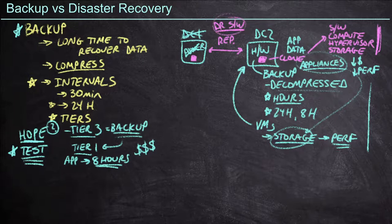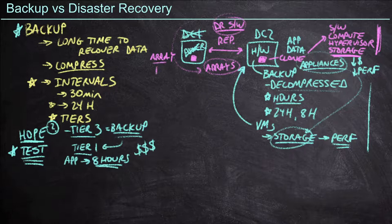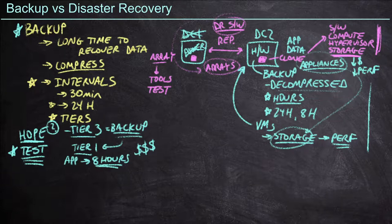Incidentally, rather than deploying DR software, if we want to save a little bit of money, sometimes our storage arrays themselves will actually have this functionality. This usually requires that we have the same storage array in both locations — if we've got a storage array made by vendor A on the right and the same vendor's storage array on the left, we could enable replication between them and take advantage of that from a disaster recovery perspective, so long as we have good tools in place and test the process.